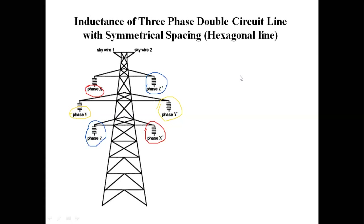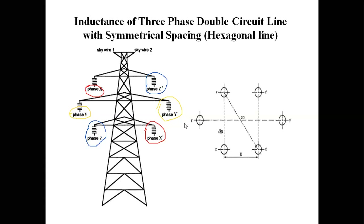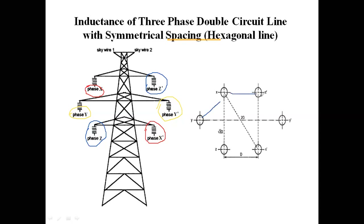After arranging in a hexagonal shape, the first line has conductors x, y, z and the second line has z', y', x'. Phase x is at the top-left position and x' is at the bottom of the other line. All sides of the hexagon are taken as equal distance d.